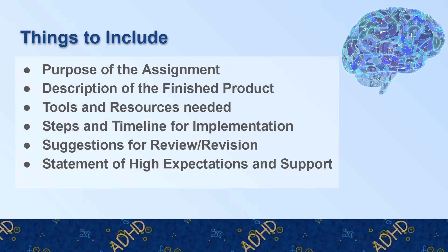So what are the things we're going to go over? I have six major things that I think should be included: purpose of the assignment, description of the finished product, tools and resources needed, steps and timeline for implementation, suggestions for review and revision, and a statement of high expectations and support. I'm going to go through each of these.